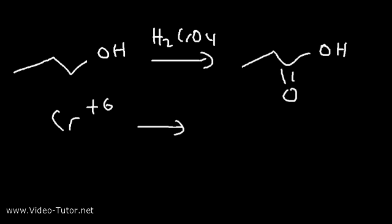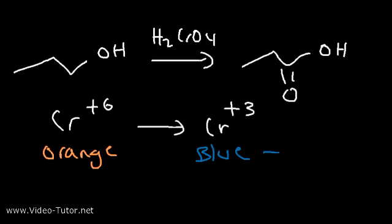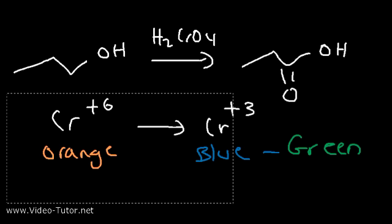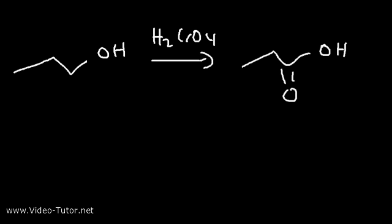Eventually, chromium is going to be reduced through a series of steps, and it's going to reach the plus-3 oxidation state. So, it's going to change from orange to a blue-green color. So, because the primary alcohol reacts with chromic acid, as the alcohol is oxidized, the chromium is reduced. So, there's going to be a color change.